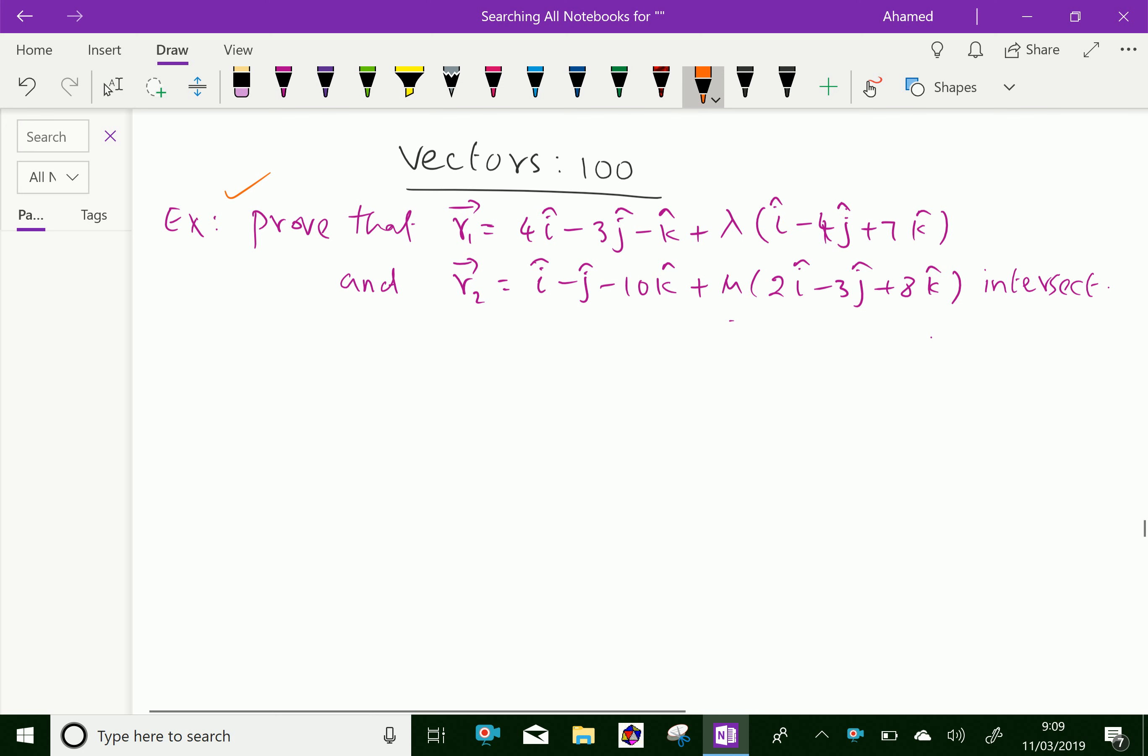Prove that vector r1 equal 4i minus 3j minus k plus lambda into i minus 4j plus 7k and r2 vector equal i minus j minus 10k plus mu into 2i minus 3j plus 8k are intersecting.